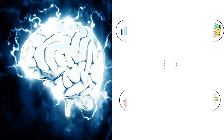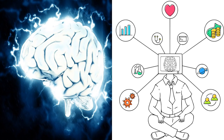The brain is the most complex organ of the human body. It has many functions like controlling other parts of the body, thinking, communication, understanding different situations, and many more.